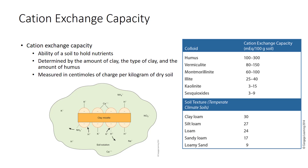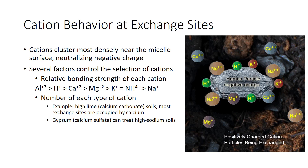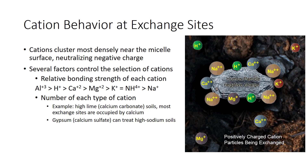Note that humus has a much higher CEC than clay. However, clay usually adds more CEC to a soil than does humus because there is so much more clay than humus in most soils. Sandy soils, low in clay, may also gain a large portion of their exchange capacity from humus, which largely explains why the addition of organic matter is so beneficial to sandy soils. Cations cluster most densely near the micelle surface, neutralizing negative charge. Cations can move on the micelle and trade places, or exchange with cations in solution. Several factors control the selection of cations that occupy the micelle or become adsorbed. Two important factors are the relative bonding strength of each cation and the number of each type of cation.